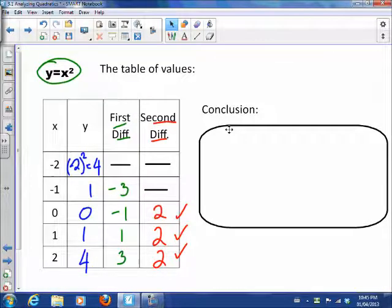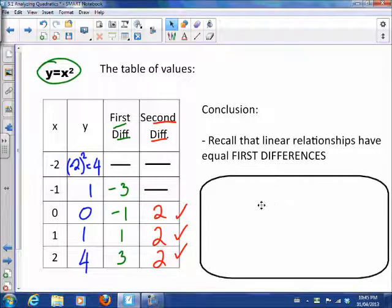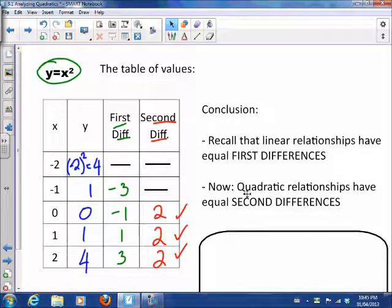So that leads us to our conclusion. So first I want you to remember that linear relationships have equal first differences, things that go up in a straight line. Today we see that quadratic relationships have equal second differences. So if a table of values has all equal second differences, we can see that the relationship is quadratic.